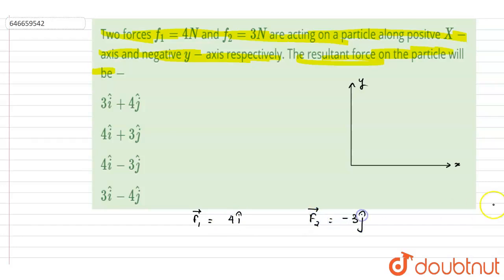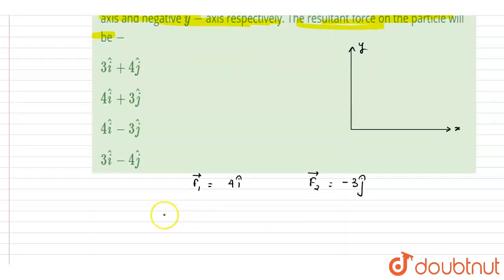this. So just add them. We will write down... it is 4î - 3ĵ. So the net force on the particle will be 4î - 3ĵ.